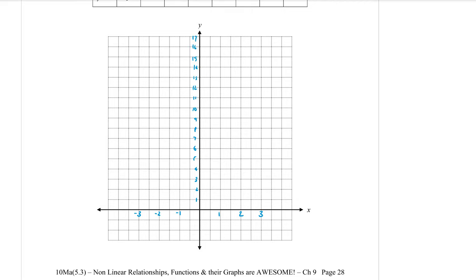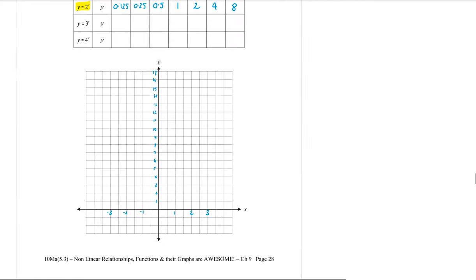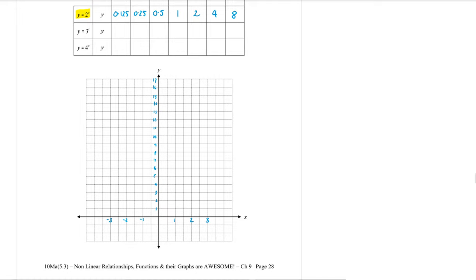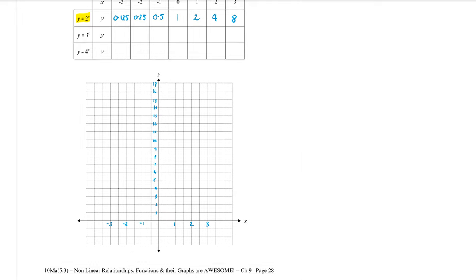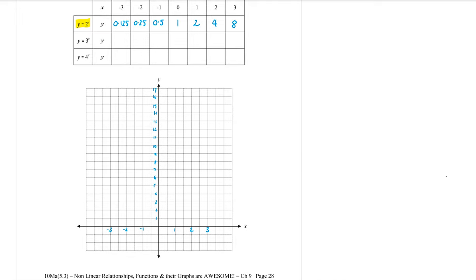So for the first graph, when x equals minus 3, y is 0.125, very very small way down here. Minus 2, it's at a quarter which is not much bigger. At minus 1 we're at a half. And at 0 we get to 1.